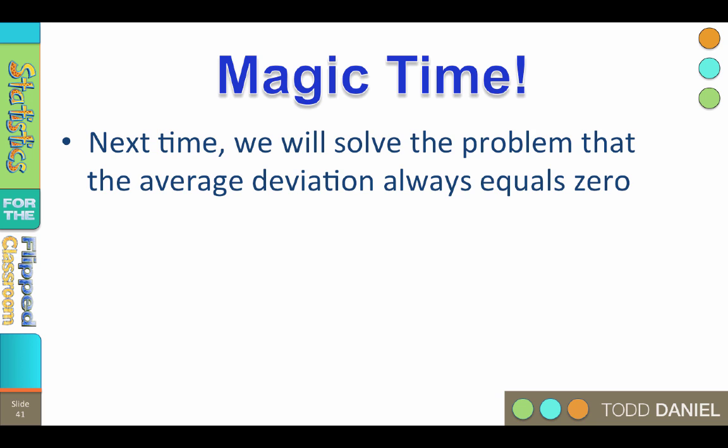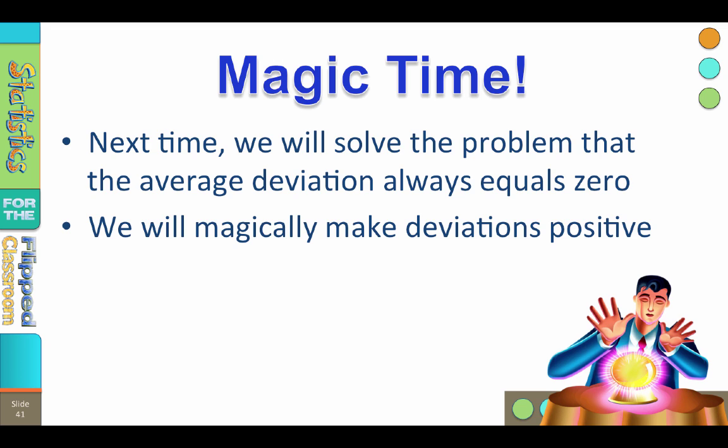But don't fret. Next time when we talk more about variability, we will solve the problem of the mean average deviation always equaling 0, by magically making all of the deviations become positive.